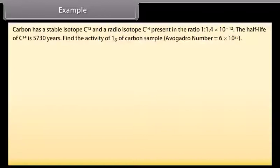Example. Carbon has a stable isotope carbon 12 and a radioisotope carbon 14 present in the ratio 1 is to 1.4 times 10 to the power minus 12. The half life of carbon 14 is 5730 years. Find the activity of 1 gram of carbon sample.